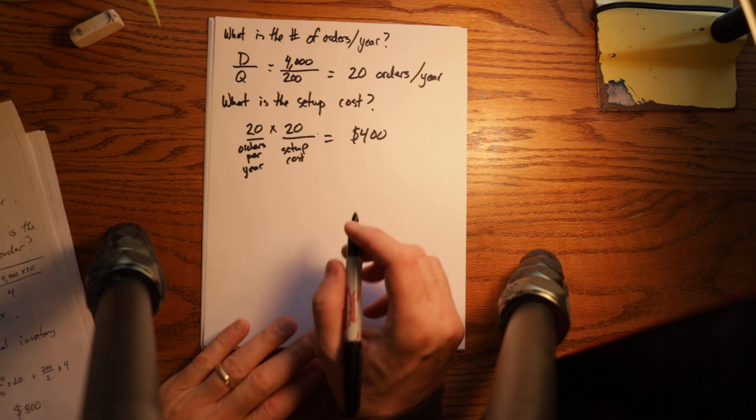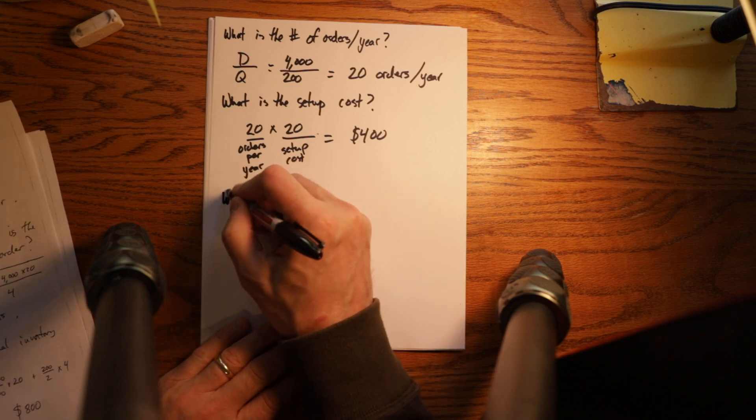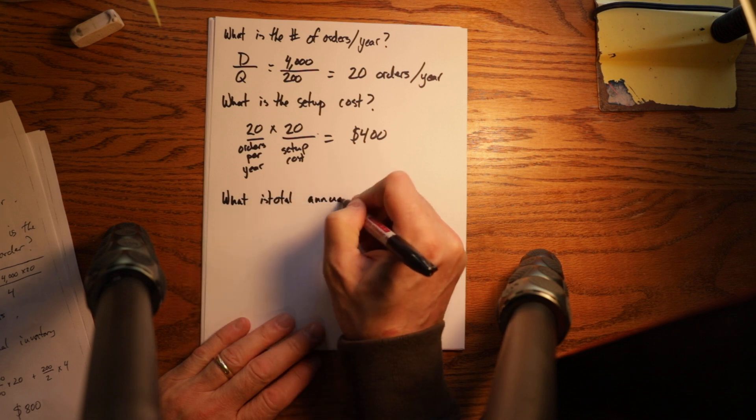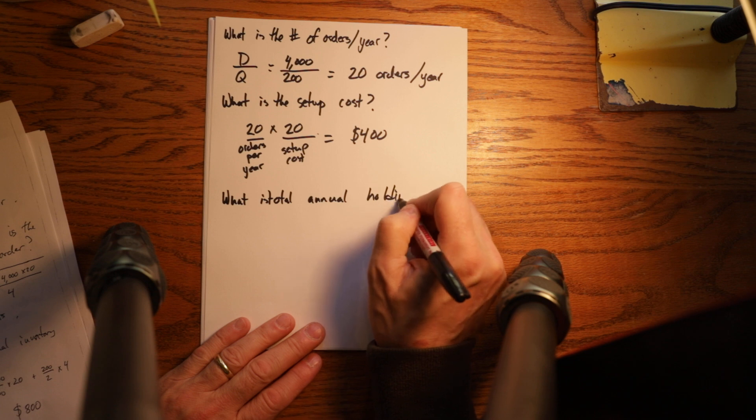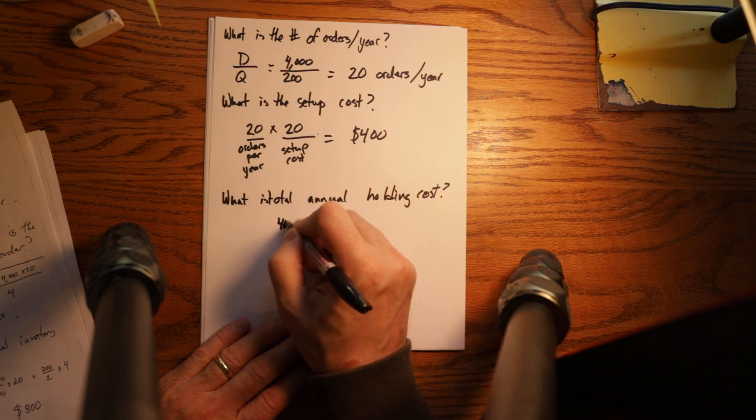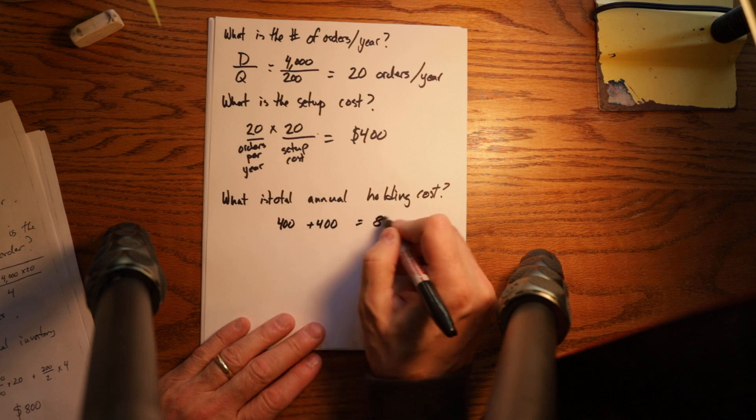So what is the total annual cost? $400 plus $400 equals $800.